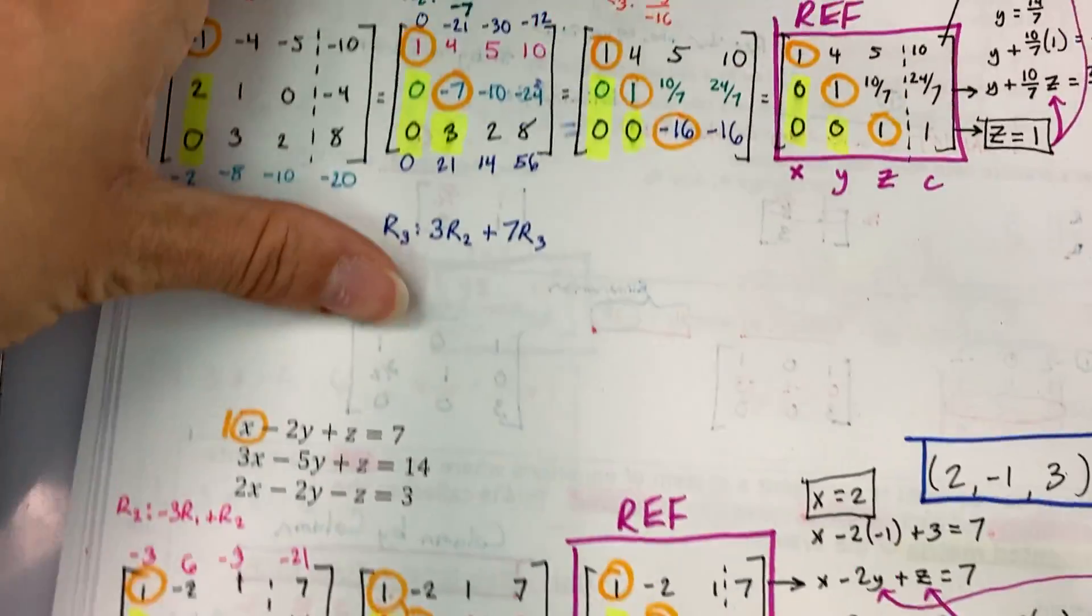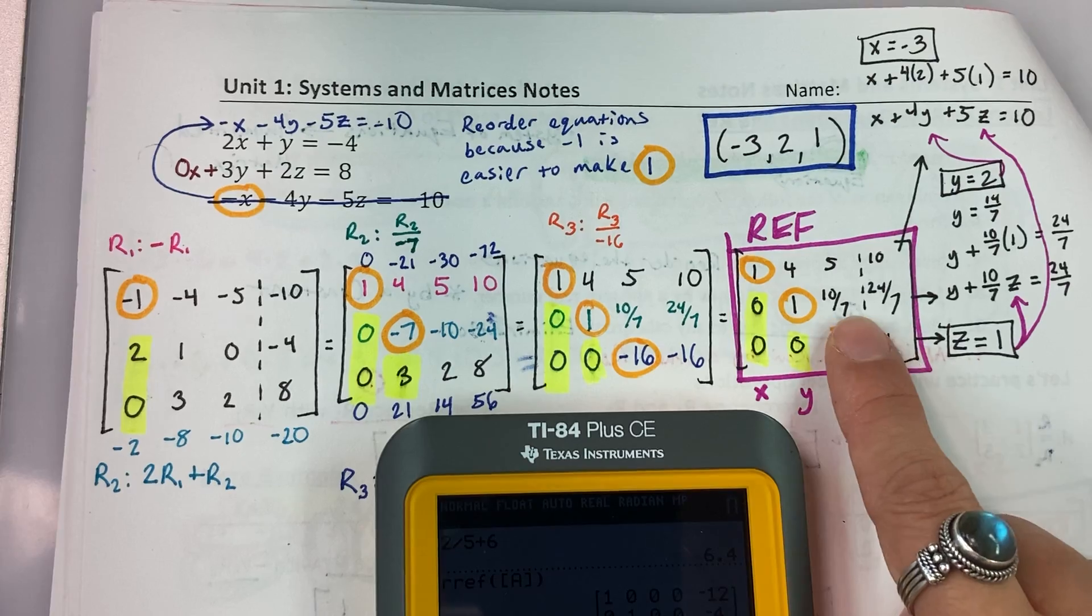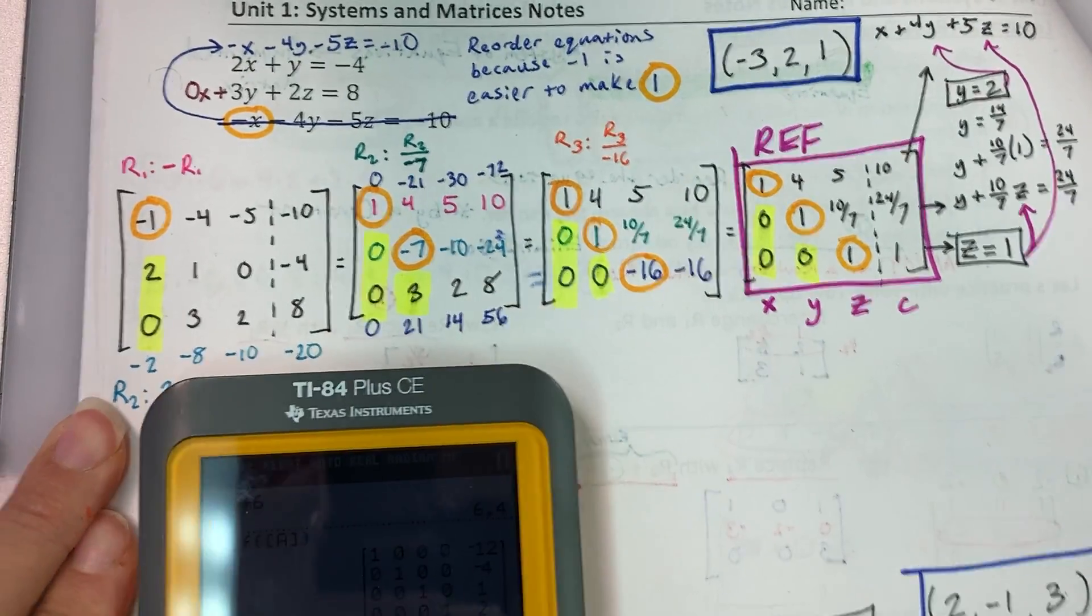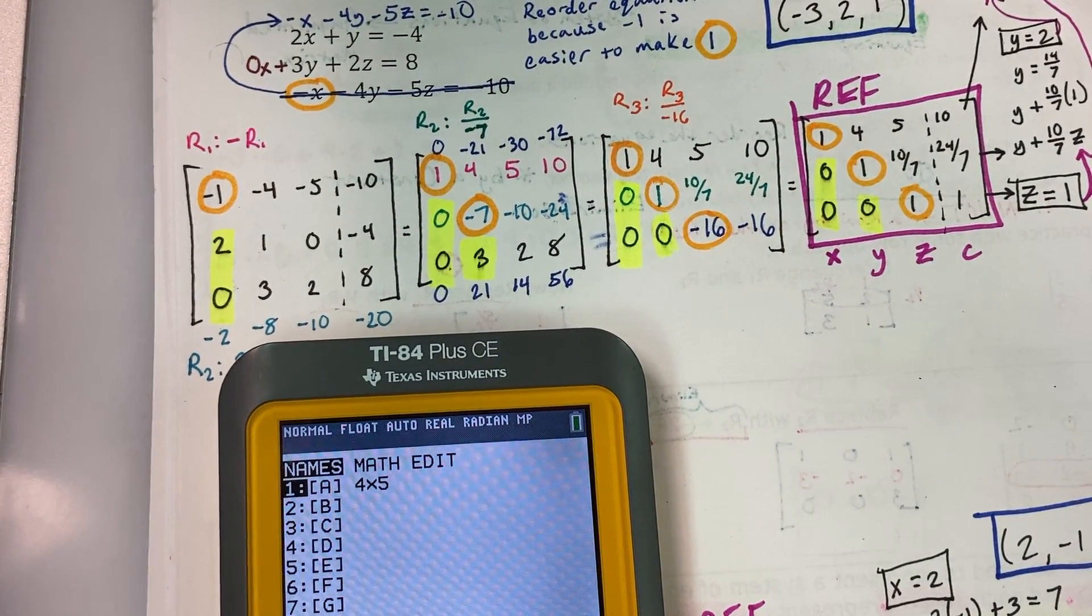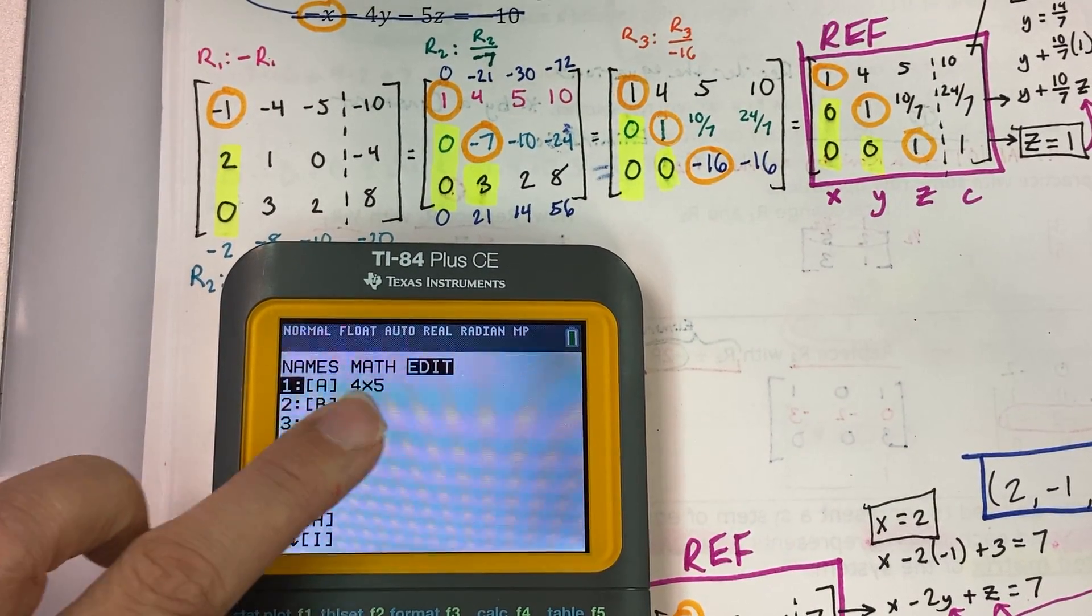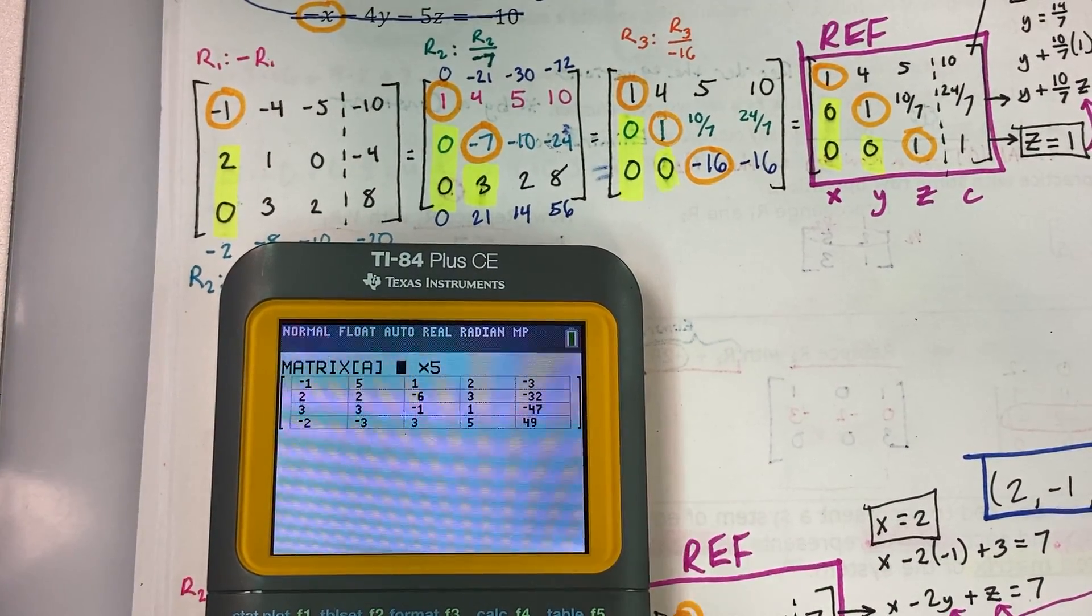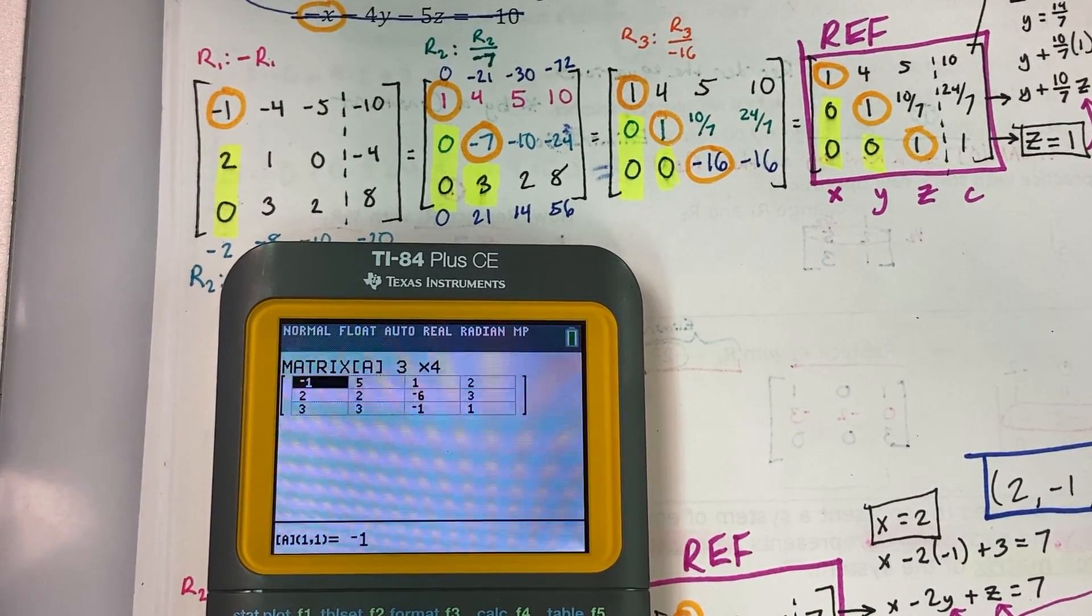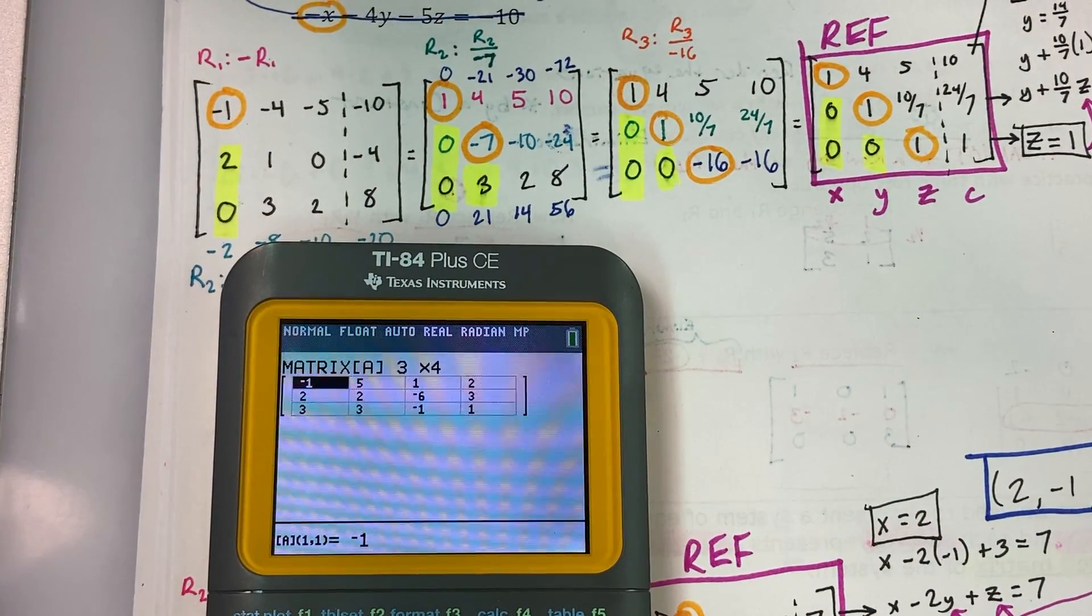So let's say that on this example where I got the fractions, I'm a little nervous because it's like, oh, I didn't like that those are fractions. I sure hope this question is correct. What we would do is go to second X to the negative one, and I always just edit matrix A. So I always just play around with that first matrix. So arrow over to select edit. Now the dimensions of this matrix is a three by four. So three rows, four columns.